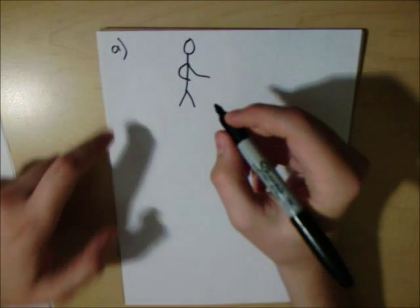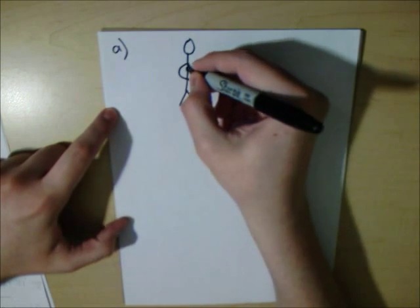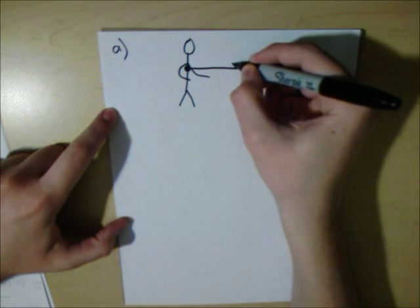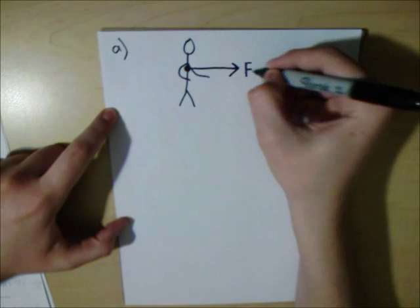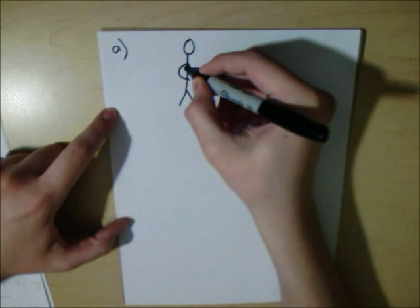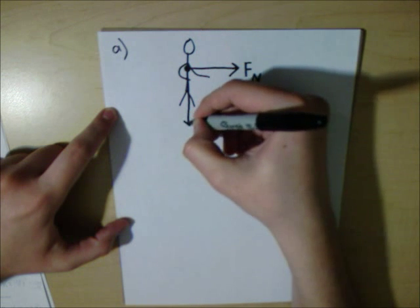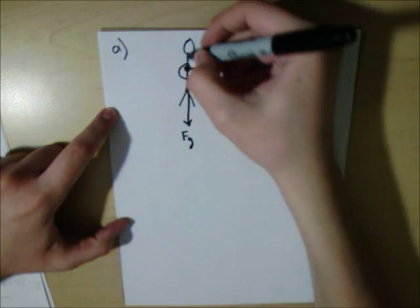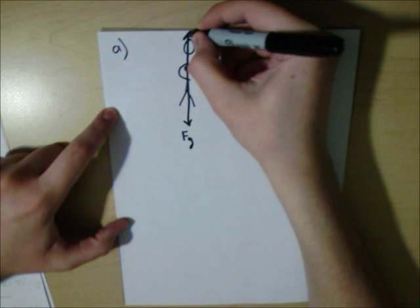So we have this person here, and this is the center of mass, and at this point of contact there is a normal force pointed to the right. There is gravity pointed down, and up there is a force of friction.